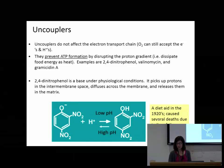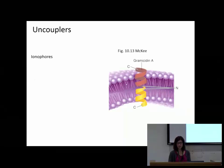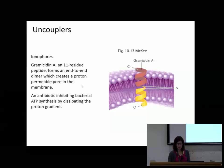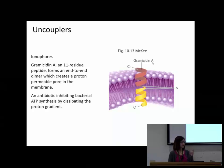Another type of uncoupler is called an ionophore, which physically pokes a hole through the membrane. Gramicidin A is used to inhibit bacteria by dissipating the proton gradient. Instead of going through ATP synthase, protons can go through this physical hole. So you can either have a molecule that picks up protons and carries them through, or you have a physical hole via an ionophore.